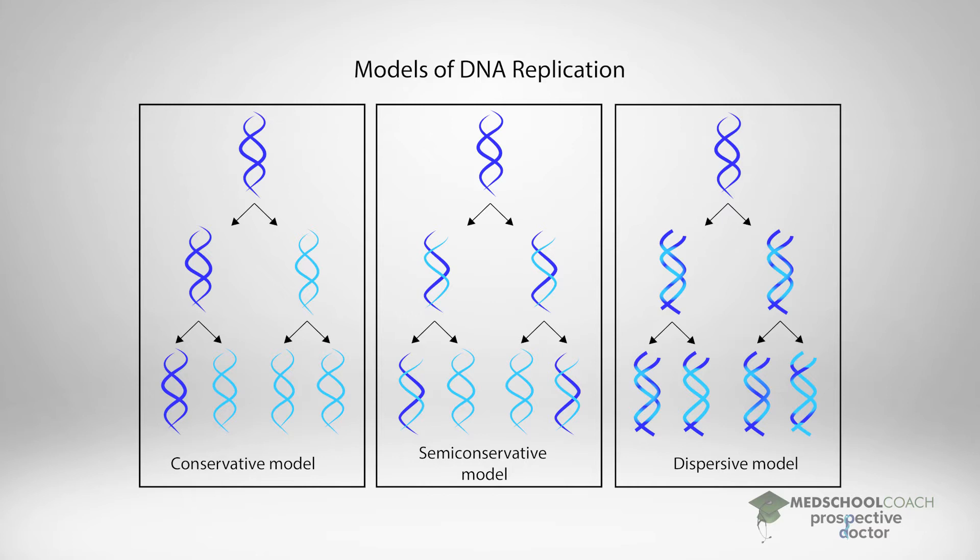Essentially these models were trying to figure out what happens to your starting DNA molecule, which you can call the old DNA molecule, when you make new copies of DNA. As you can see in the conservative model, the original DNA molecule is left alone. Nothing happens to it, and you just make brand new copies of DNA that are completely newly synthesized.